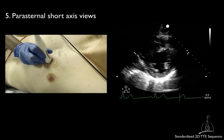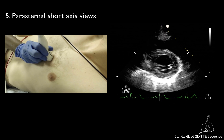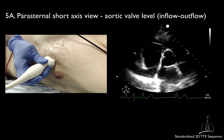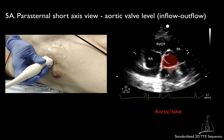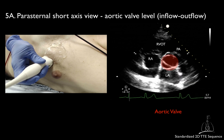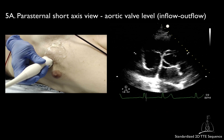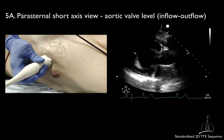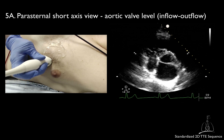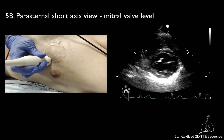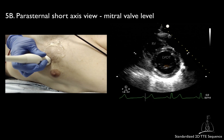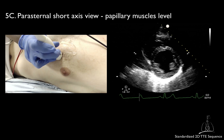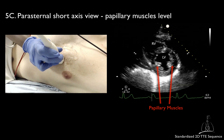You will obtain several images of the heart in its short axis at different levels. Usually we start at the level of the aortic valve — this view is also called the right ventricular inflow-outflow view. By tilting the transducer's tail slightly toward the right shoulder, you will obtain more apical views: the parasternal short axis view at the level of the mitral valve, and the parasternal short axis view at the papillary muscle level, also called the midpapillary view.